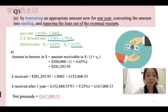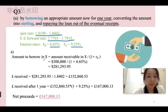The amount to borrow in US dollars is equal to the amount receivable in US dollars divided by 1 plus the USA interest rate, equal to $300,000 divided by 1 plus 6.65%, equal to $281,293.95.